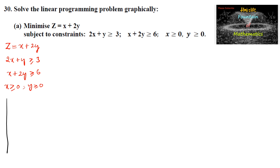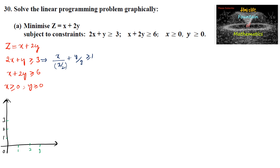We consider the first quadrant since x ≥ 0 and y ≥ 0. For the first inequality 2x + y ≥ 3, we rewrite it as x/(3/2) + y/3 ≥ 1, giving x-intercept = 3/2 and y-intercept = 3. The straight line passes through the points (0, 3) and (3/2, 0).